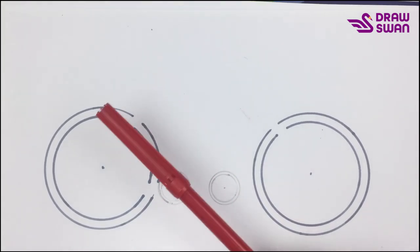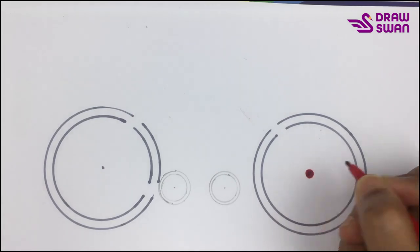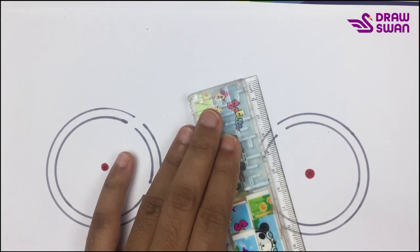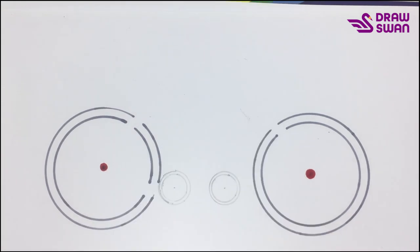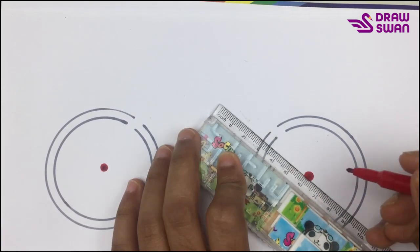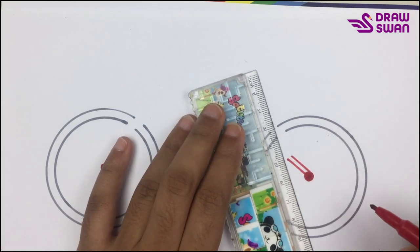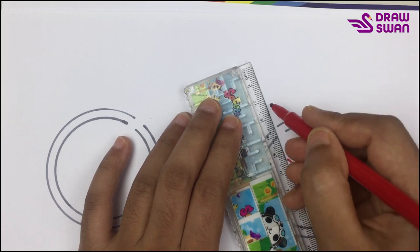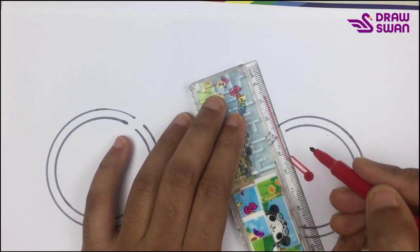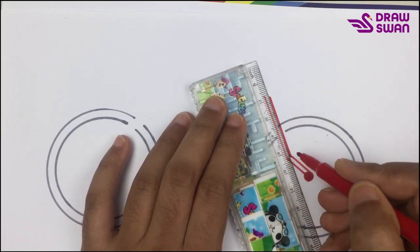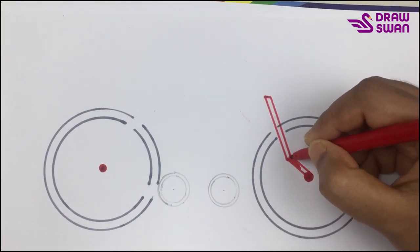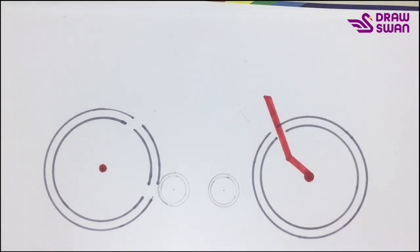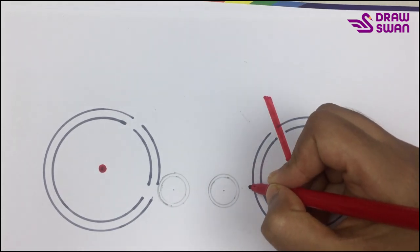Now I'm using my red pen. Let's draw two circles. Let's draw the cover of the wheel.